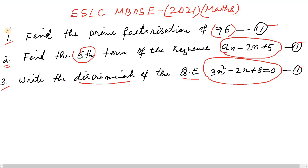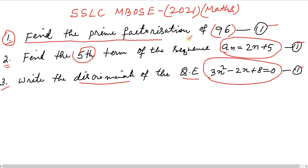Now let's work through the solutions. Question number 1: Find the prime factorization of 96.